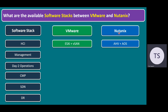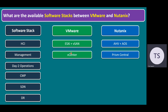When it comes to Nutanix, we have AHV — Acropolis Hypervisor — combined with Acropolis Operating System. This is similar to VMware; Nutanix is also providing an HCI solution. To manage multiple ESXi hosts, we require a management tool. The VMware management tool is vCenter Server, which manages multiple ESXi hosts and configures vSAN.